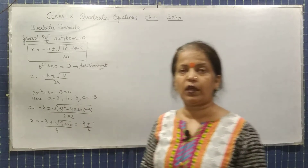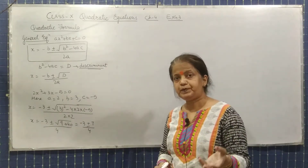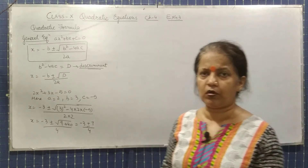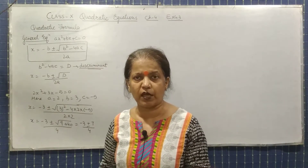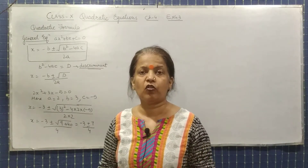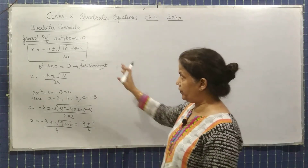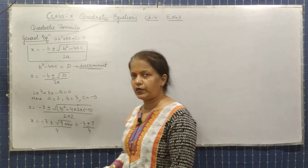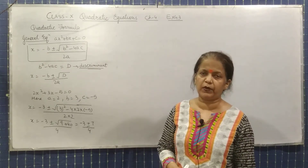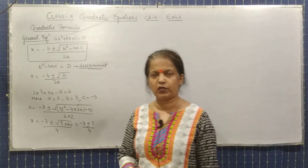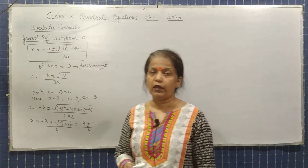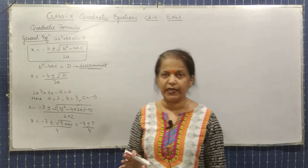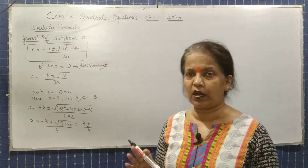So this method is quite important. Suppose you have a quadratic equation and you couldn't find its answer using factorization — you cannot find the value of x. In that case, it will be better to use the quadratic formula: x = (−b ± √(b² − 4ac)) / 2a. And b² − 4ac is also called D, the discriminant.